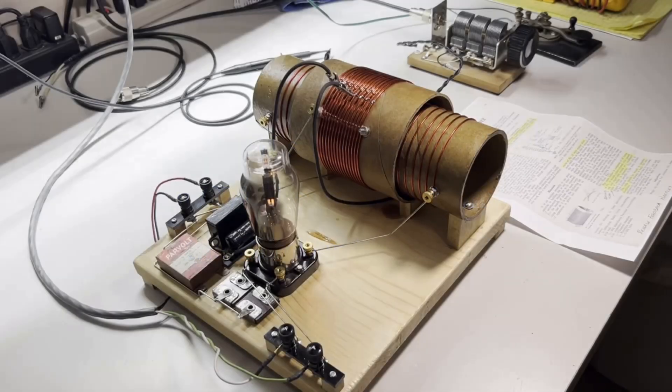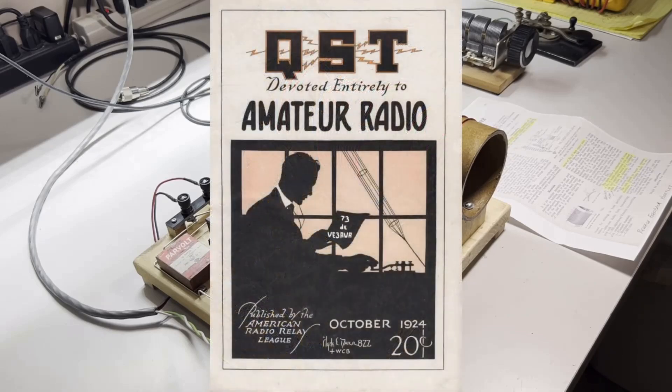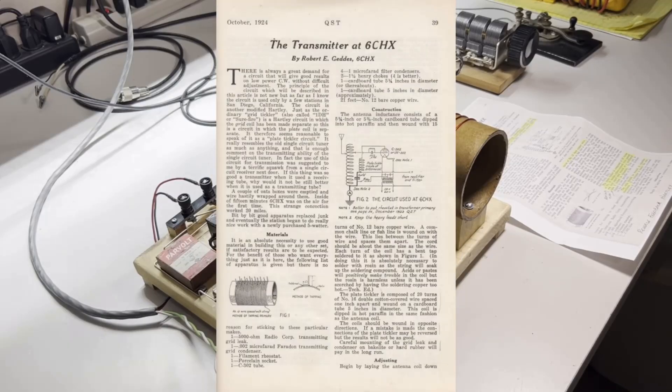So this is just a short video on my newest build of a transmitter from 1924. It came from QST October of that year. The article is called the transmitter. It's 6CHX. Robert Gettys built this.